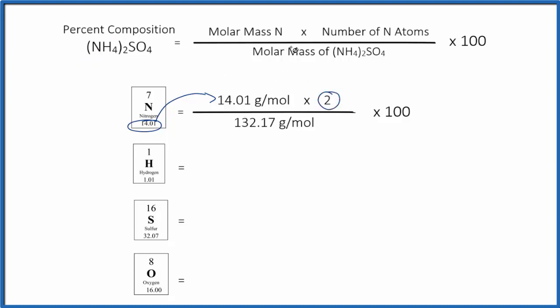And then we divide that by the molar mass of NH42SO4. If you need help calculating that, there's a link at the end of this video. 132.17 grams per mole. We have grams per mole on the top and bottom. Those are going to cancel out, so we won't have any units here.